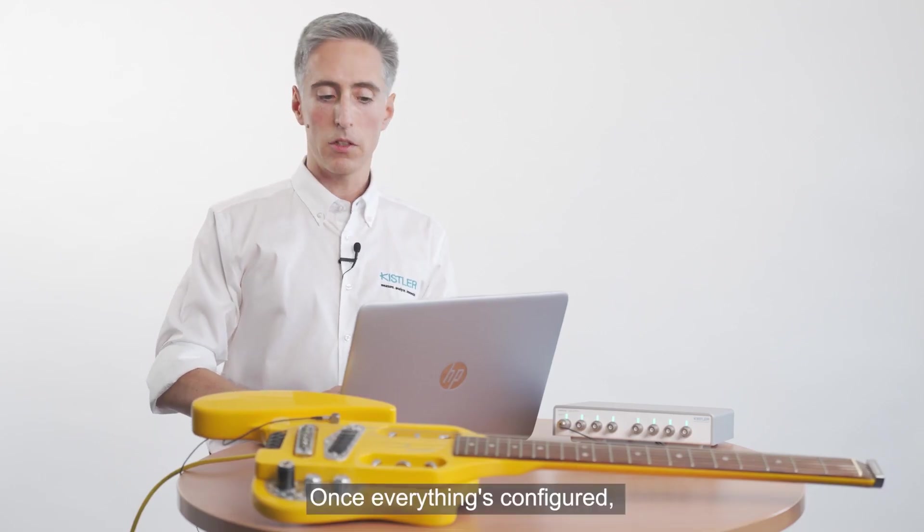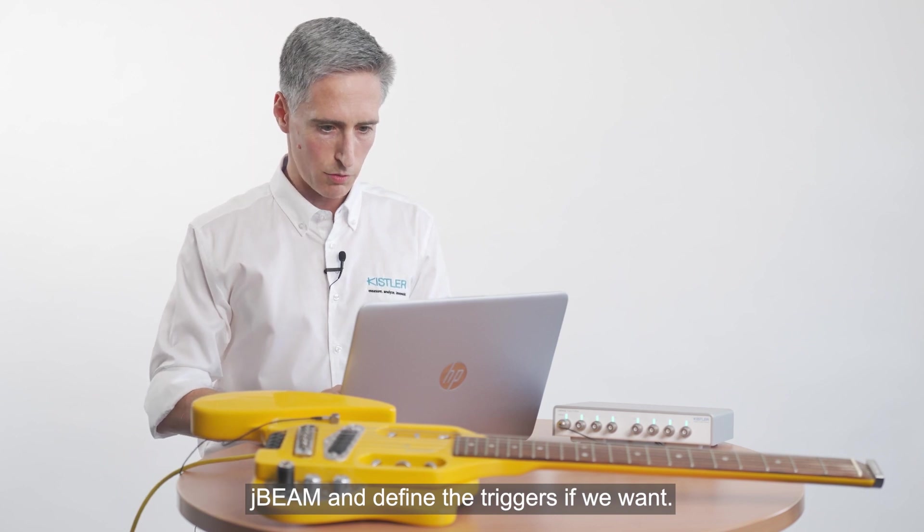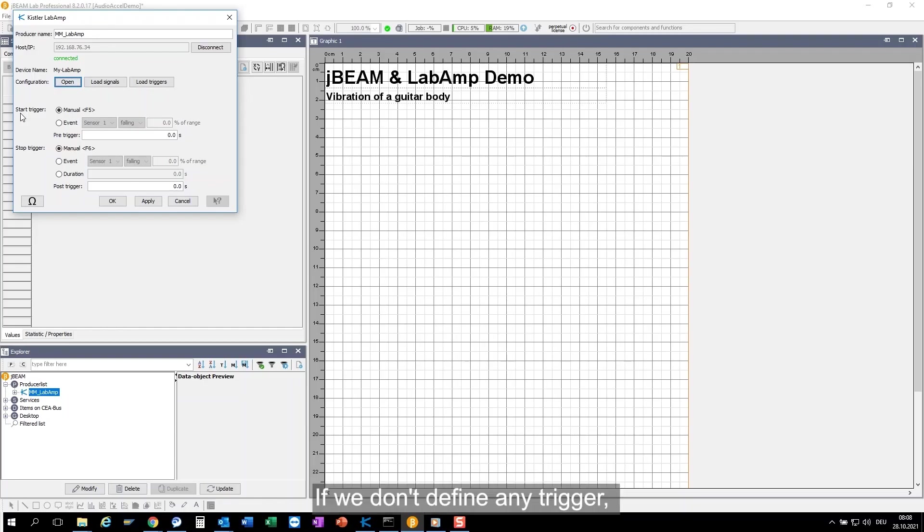Once everything's configured we can return to JBeam and define the triggers if we want. If we don't define any trigger we control the measurement by pressing F5 for start and F6 for stop. So let's do it like this right now.